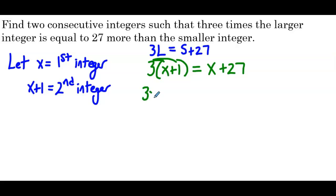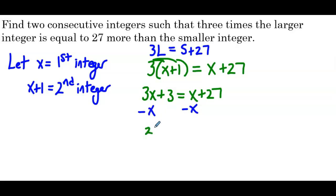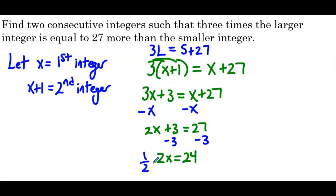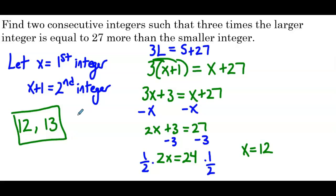Then start by distributing the 3 in: 3x plus 3 equals x plus 27. Now we solve that linear equation — subtract x from both sides to get 2x plus 3 equals 27. Subtract 3 from both sides: 2x equals 24. Multiply both sides by one half and we have x equals 12. So 12 is the first integer, and adding 1 gives us 13. Our two consecutive integers are 12 and 13.